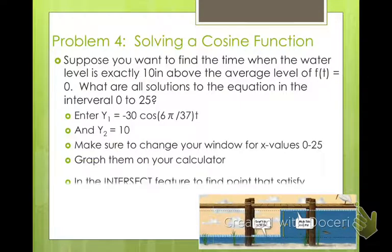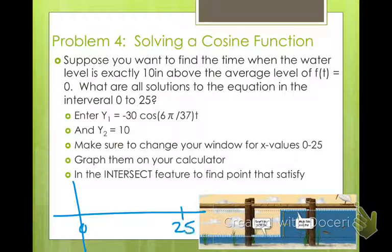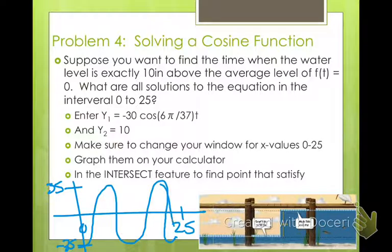So go ahead and graph them both on your calculator, and then you're going to use the intersect feature to find all the points that satisfy. So when you graph it, it's going to look kind of like this. So I have my x window from 0 to 25, and I have my y window from negative 35 to positive 35. So it looks kind of like that for your first one. And then your second one goes like this. So all of these points here where the two cross each other, all four of those points are locations where the water level is 10 inches above your average.